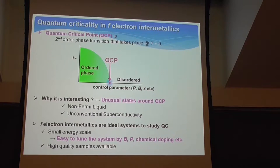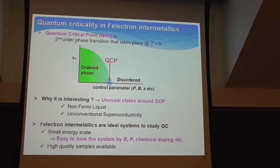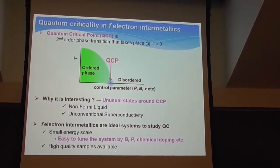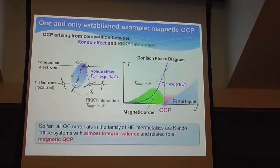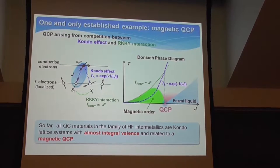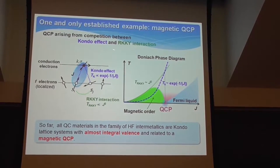F-electron systems are quite important as ideal systems to study quantum criticality because the system has a small energy scale. Therefore, it is relatively easy to tune the ground state of the system by using field, pressure, and chemical doping. Another advantage is the fact that high-quality samples are available. There is one established example, which is the magnetic QCP.